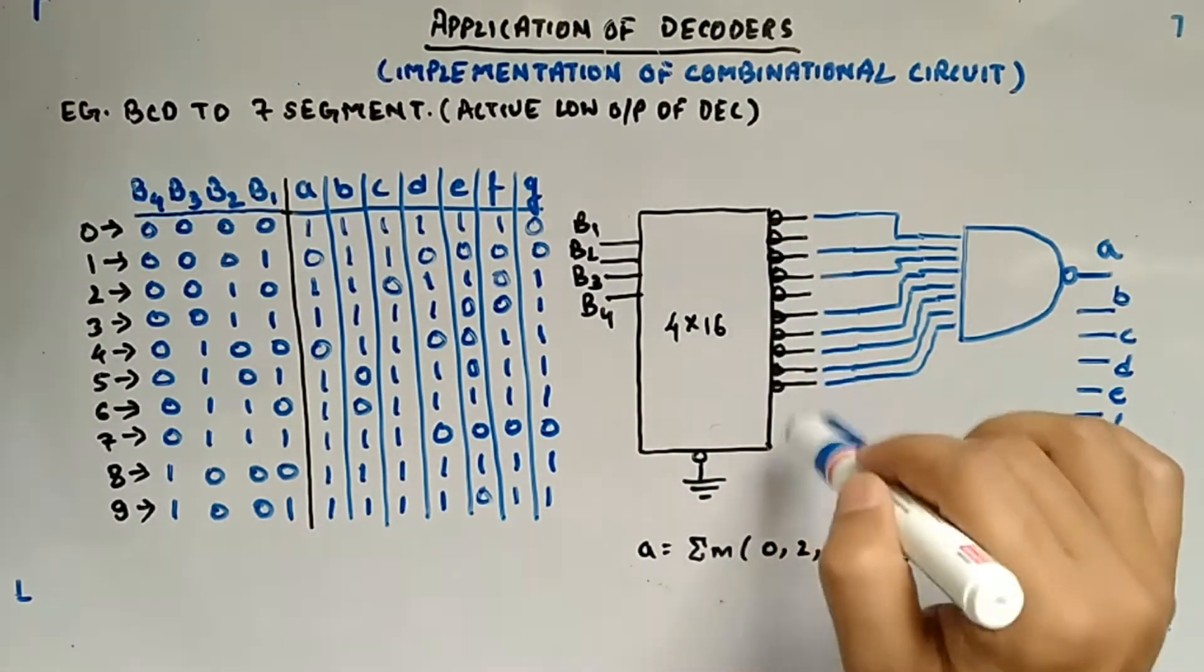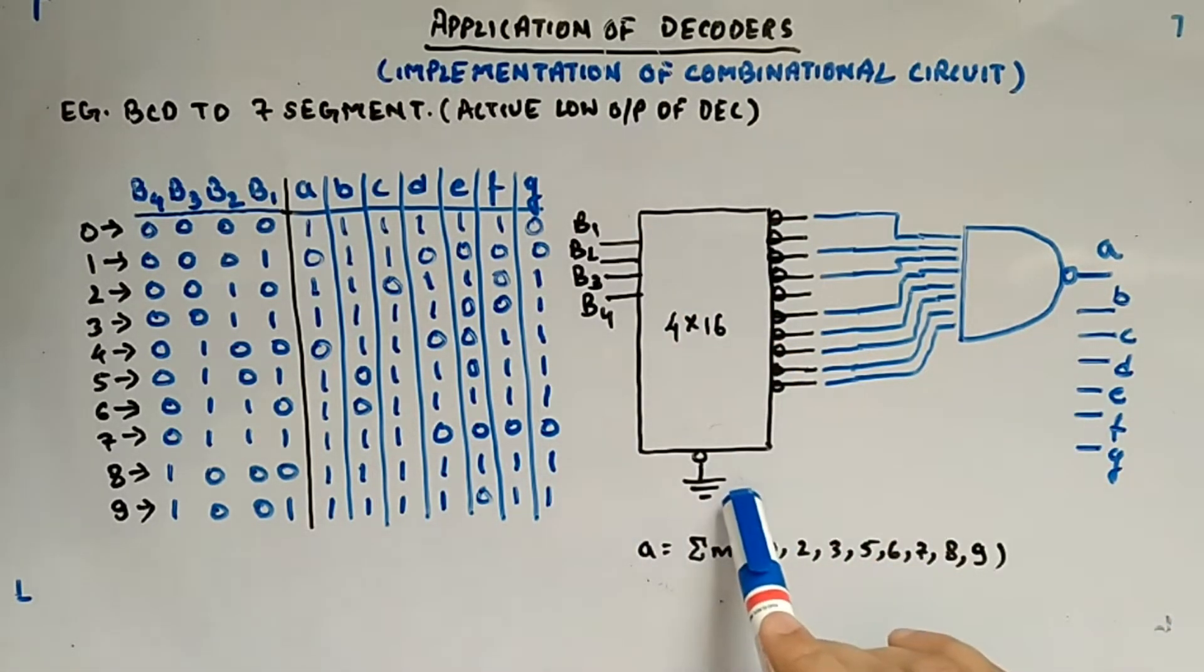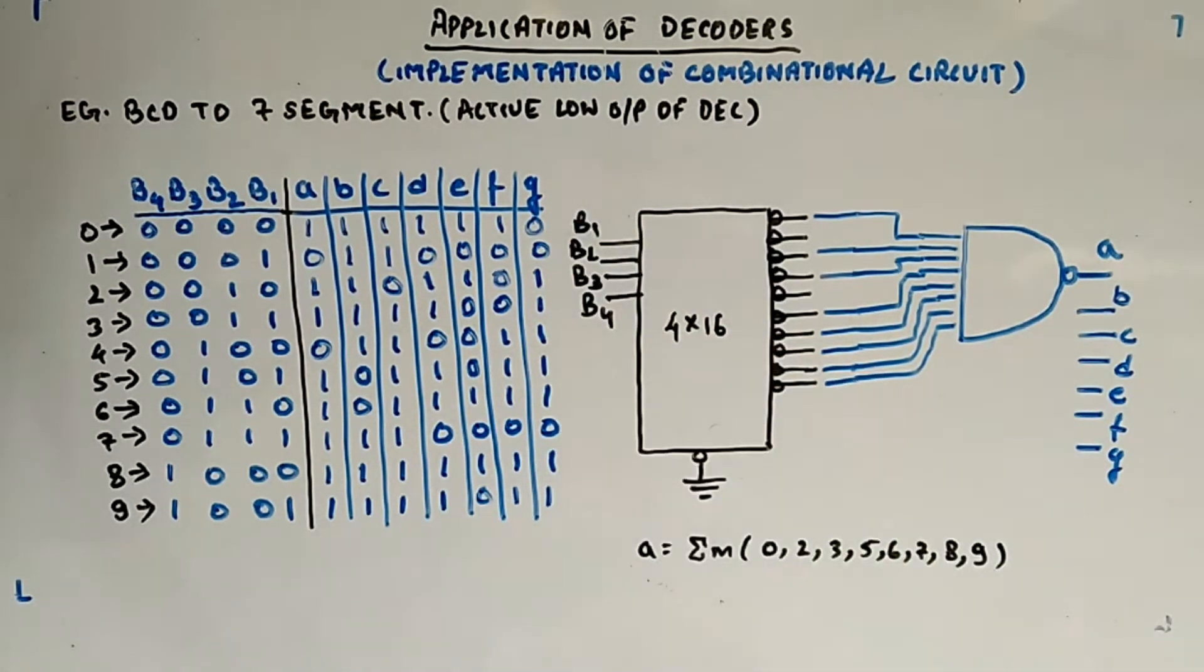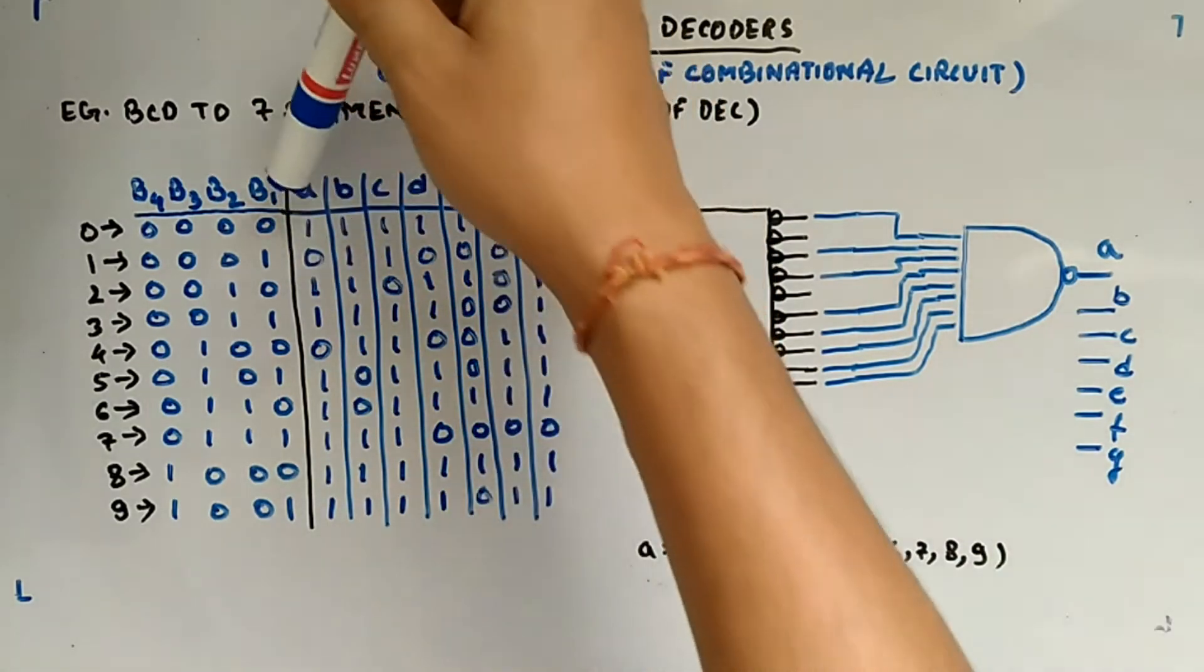Here you can see that the bubbles, rest everything is same. You can see here ground is there, here the inputs are given, this is MSB, this is LSB.